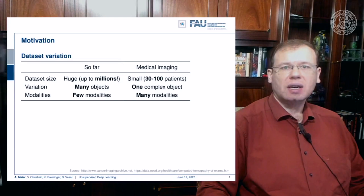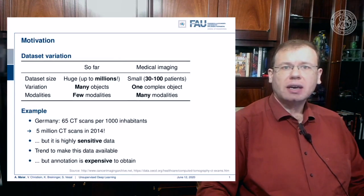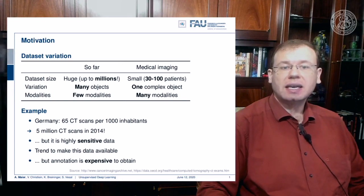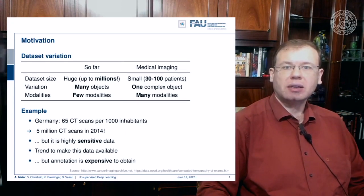These modalities have very different appearances, which means they also have different requirements in terms of processing. In Germany we actually have 65 CT scans per thousand inhabitants, meaning that in 2014 alone we had 5 million CT scans in Germany. So there should be plenty of data — why can't we use all of this data?